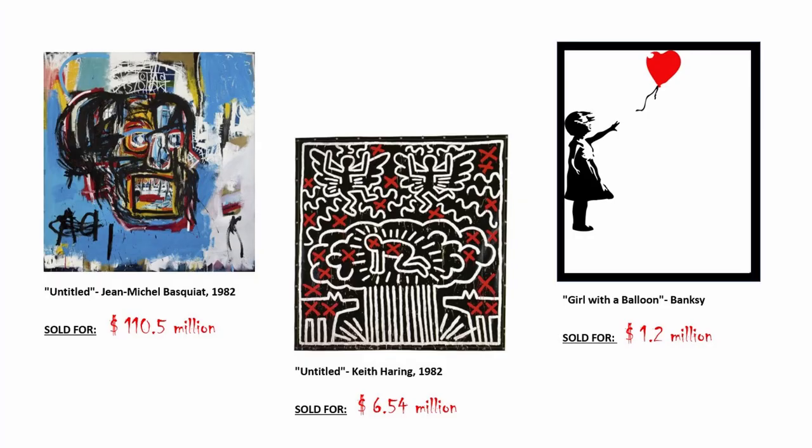The popularity of street art is evident through the prices their works were sold for at auctions. Jean-Michel Basquiat, regarded as the USA's most important Afro-American artist, made a painting labeled 'Untitled' that was sold at auction for around $110.5 million. Keith Haring's 'Untitled' painting was sold for $6.5 million. And Banksy, one of the most famous and anonymous street artists of the 21st century, sold his painting titled 'Girl with a Balloon' for $1.2 million.